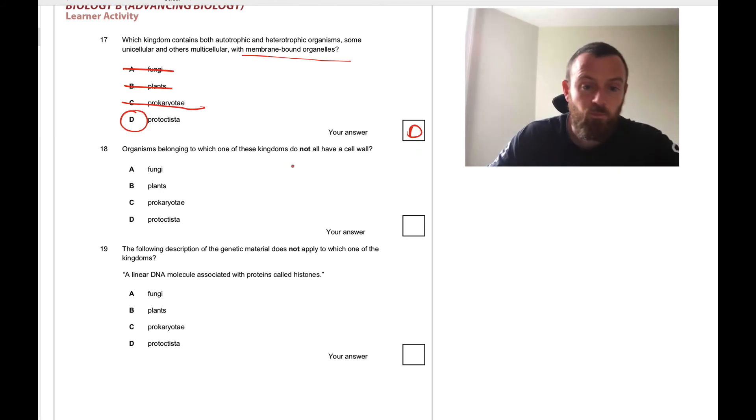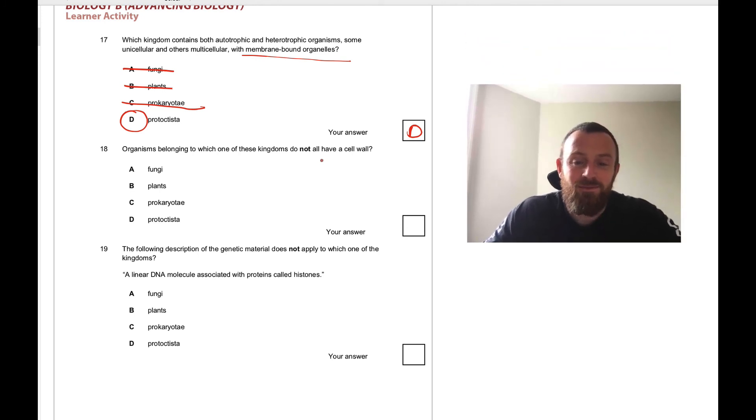Moving on to 18. Organisms belonging to which one of these kingdoms do not have a cell wall? Fungi do, made out of chitin. Plants do, made out of cellulose. Prokaryotes do, made out of peptidoglycan. Protoctista, they don't have cell walls.